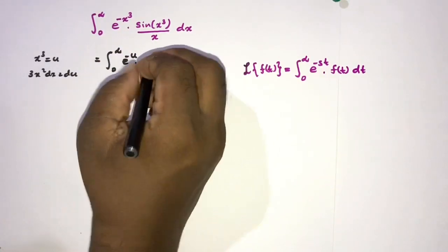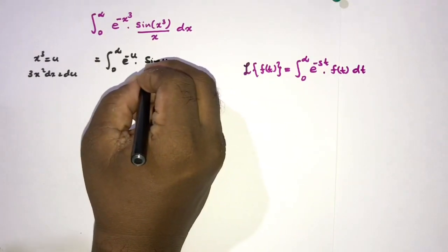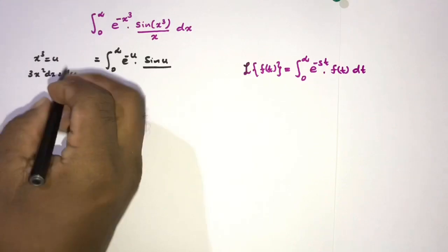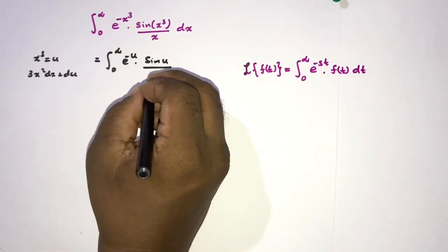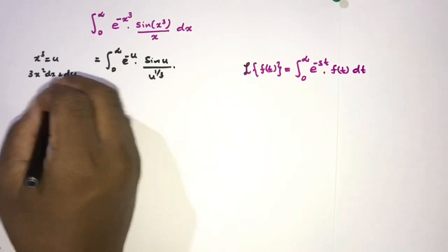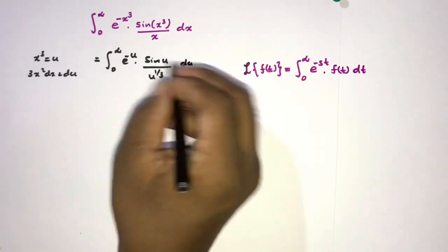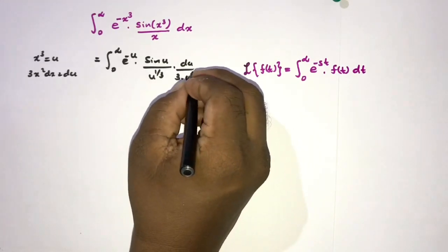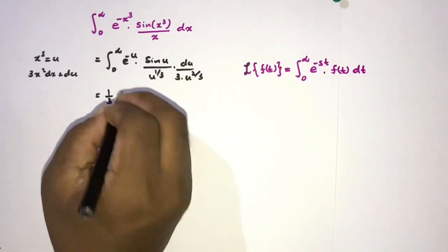Here e^(-u), now here we have sine of u over x. We know u^(1/3), so u^(1/3), then dx. dx we know is du over 3x². x² we know is u^(2/3). Okay, then 1/3 is a constant.